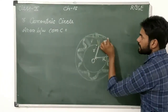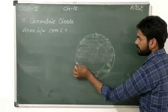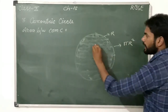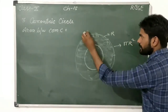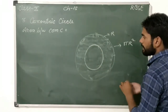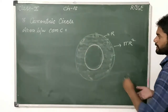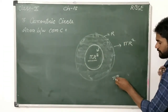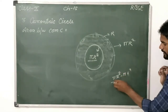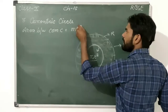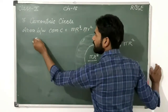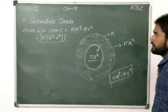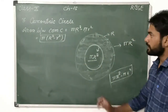To calculate the area of the region between two concentric circles: first calculate the full area of the larger circle with radius R, which is πR². Then remove the area of the smaller inner circle. So the area equals πR² minus πr², which simplifies to π(R² − r²). This is the formula for the area of a concentric circle region.